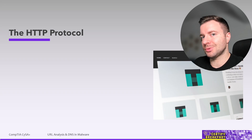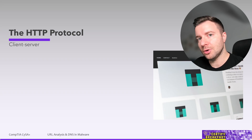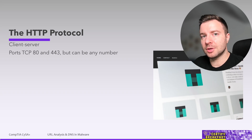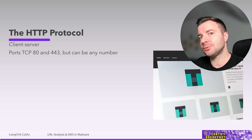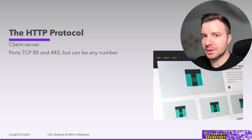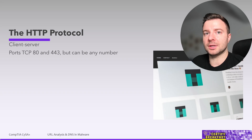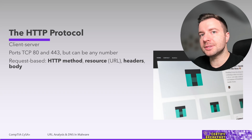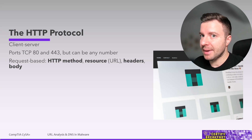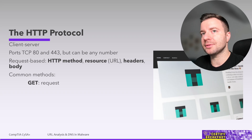When talking about URLs and web locations, remember that the number one protocol is HTTP. A brief understanding of HTTP is useful: a client — most likely a browser, also called a user agent — makes an HTTP request to a web server listening on a TCP port. By default, those ports are port 80 for plain text HTTP and port 443 for HTTPS — that's HTTP over TLS, encrypted. In real life, these ports can be any number; this is just a convention. HTTP is a request-based protocol, and typically a request includes an HTTP method, a resource identified by the URL, some headers, and the body of the request.